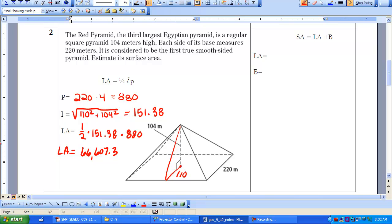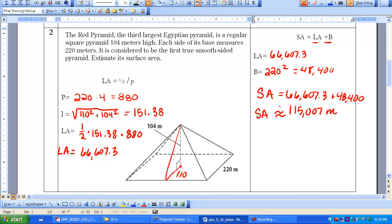So now when I go to really try and answer the surface area question, I have my lateral area. I still need the area of my base. So the area of my base is going to be 220 squared, which equals 48,400. Now I have enough information, all my values found, so I can go ahead and plug it into my equation. 66,607.3 plus 48,400. So that gives me a surface area of approximately 115,007 meters squared.